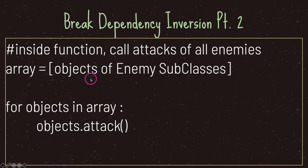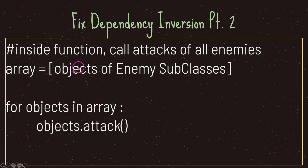In our third class — which could be any class — we have an array containing all the objects of our enemy subclasses. We simply use a for loop: for each object in the array we call object dot attack. This is pseudocode, but this is essentially what the dependency inversion solution looks like. This fixes our dependency inversion because we don't rely on knowing the specific attack function from each subclass. Instead we call a general attack function and in our third class we only care that our objects have an attack function and that it does something.